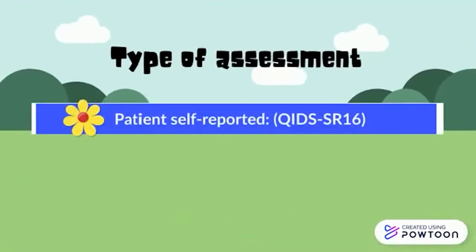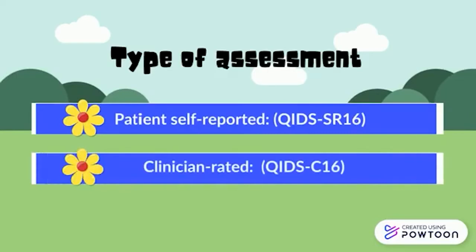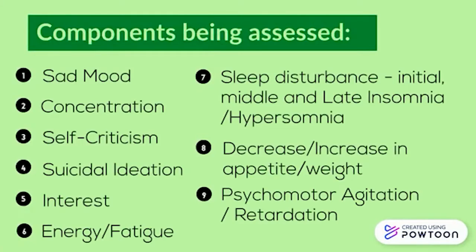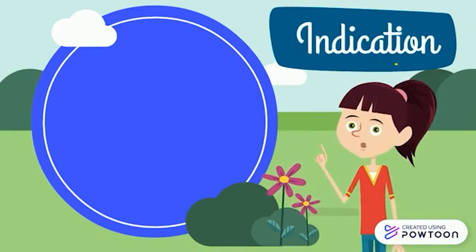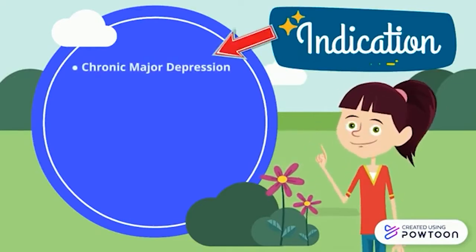QIDS can be patient self-reported and clinician-rated for the type of assessment. The components being assessed are: 1) sad mood, 2) concentration, 3) self-criticism, 4) suicidal ideation, 5) interest, 6) energy and fatigue, 7) sleep disturbance, 8) level of appetite and weight, and 9) agitation or retardation of psychomotor.